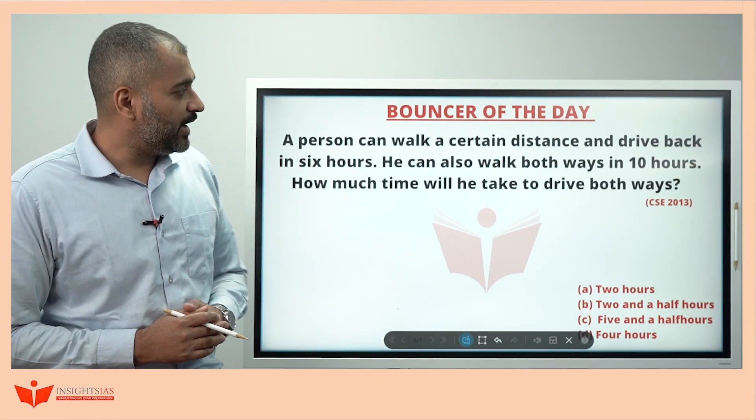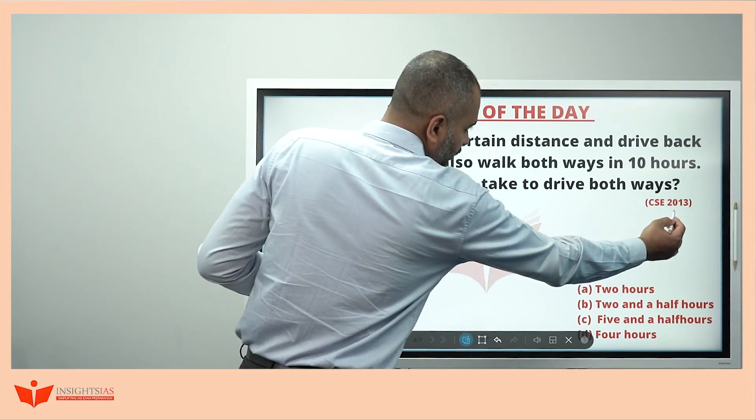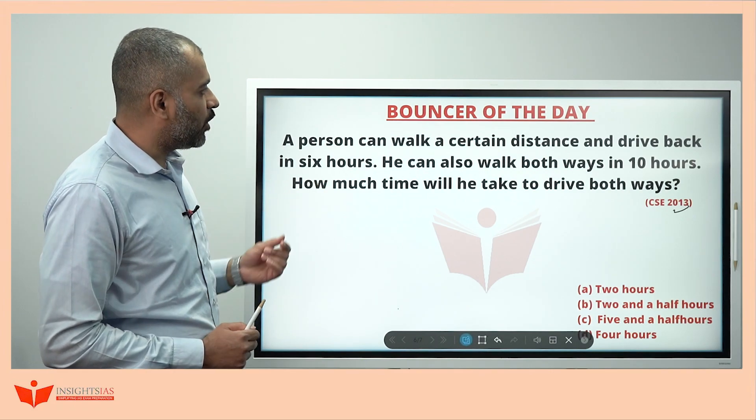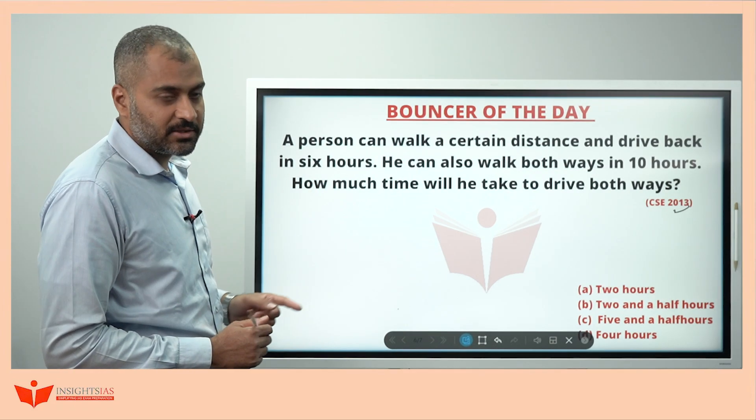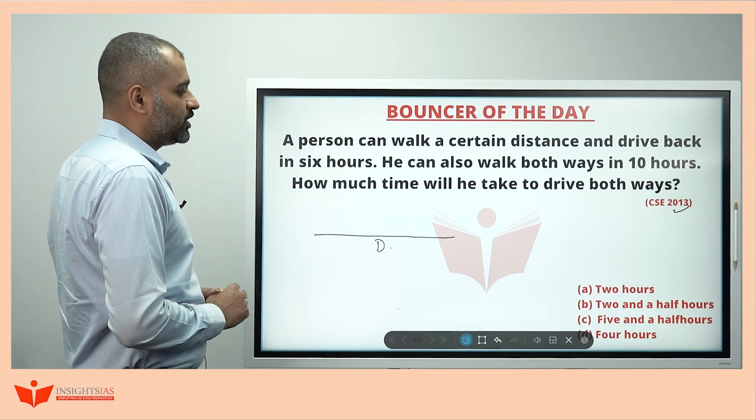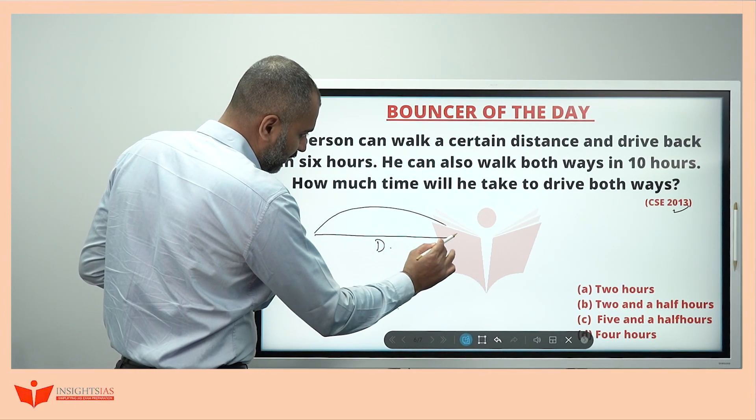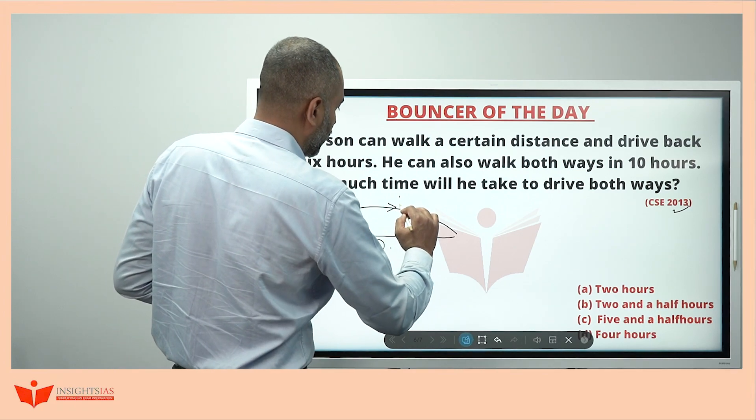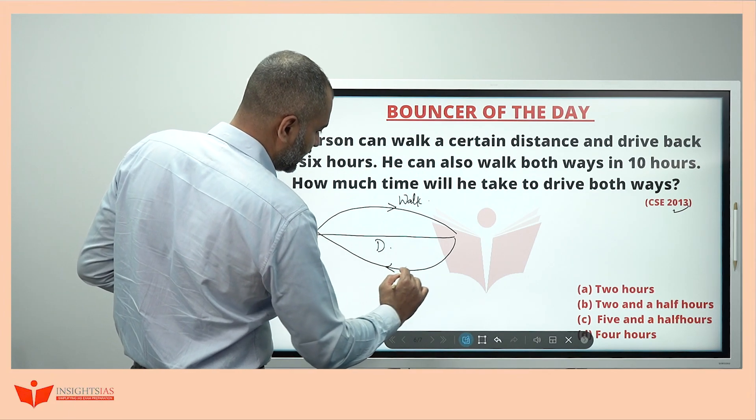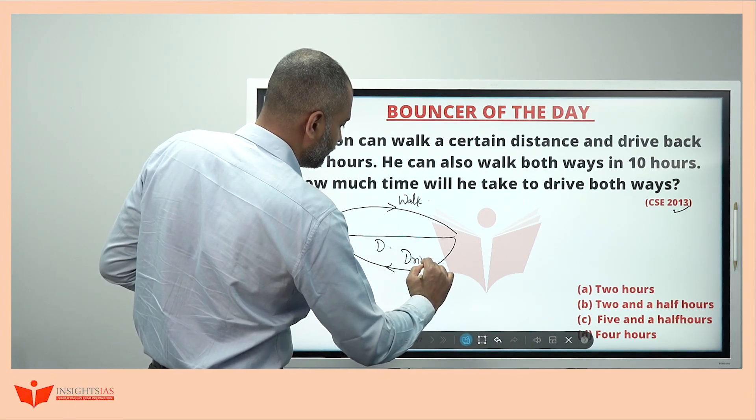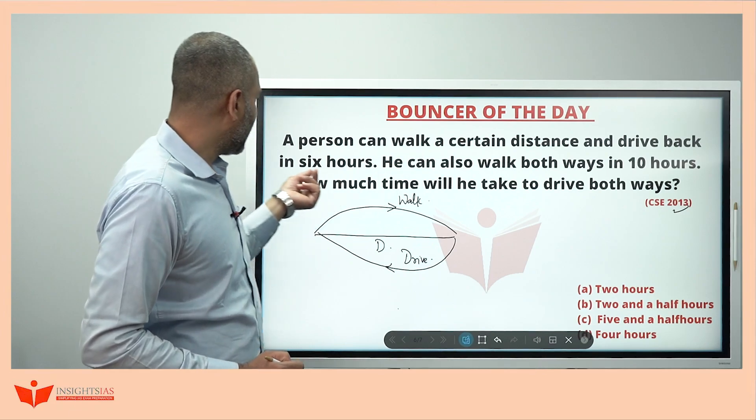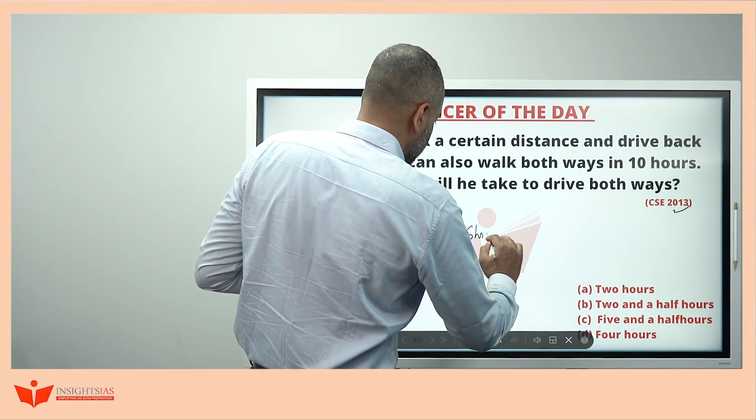And, this is the bouncer of the yesterday. This question was asked in 2013. The question says, a person can walk a certain distance and drive back in 6 hours. A person is travelling certain distance. Let us consider this distance as d. He is travelling this distance from one side, from here to here. Let us consider, he is going by walk. And, from here to here, he is coming back by driving. One way walking, one way driving. A person walks and drives back in 6 hours. The total time taken is 6 hours here.